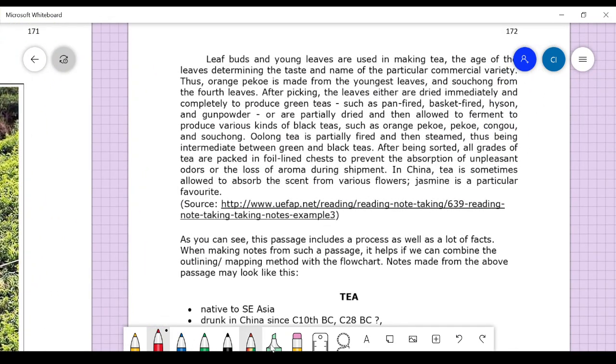China, India, and Indonesia are the main producers. Leaf buds and young leaves are used in making tea. The age of the leaves determines the taste and the name of the particular commercial variety. Thus, orange pekoe is made from the youngest leaves, and souchong from the fourth leaves.